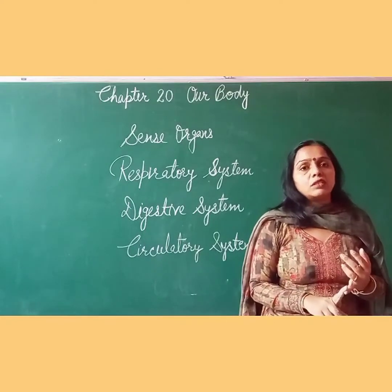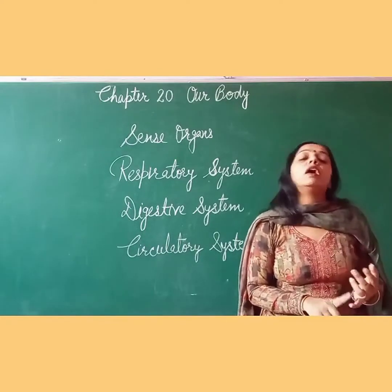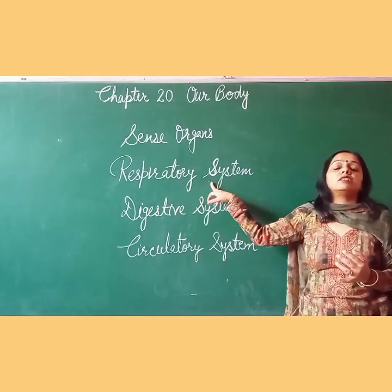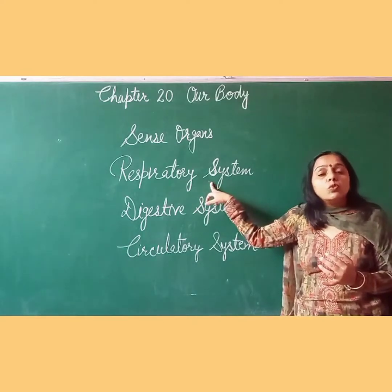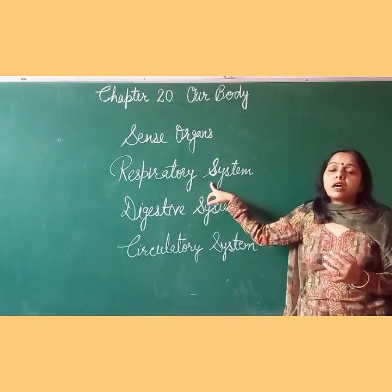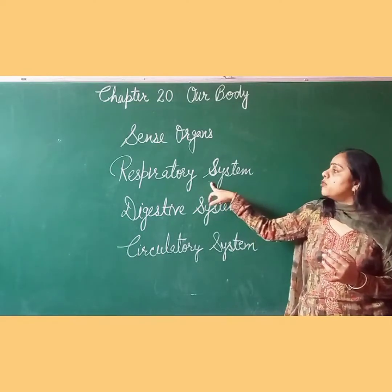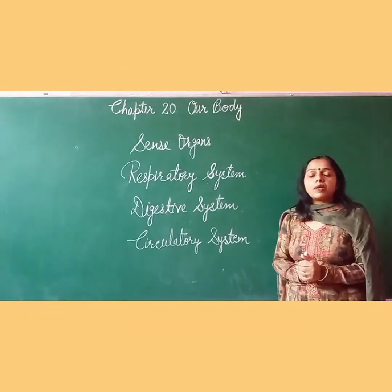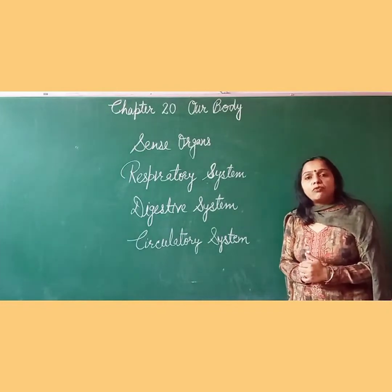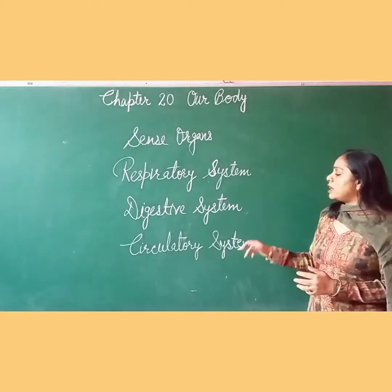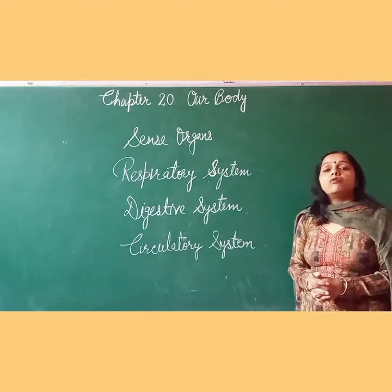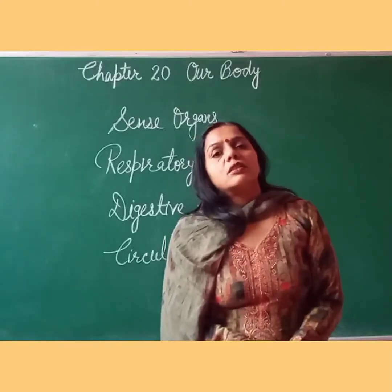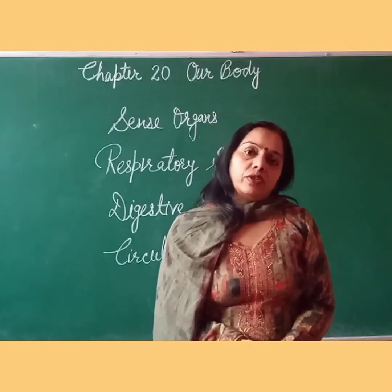So we have the respiratory system, digestive system, and circulatory system. The respiratory system helps us to breathe. The digestive system helps us to digest our food. The circulatory system handles the blood supply. The rest of the organ systems we will discuss in the next video.